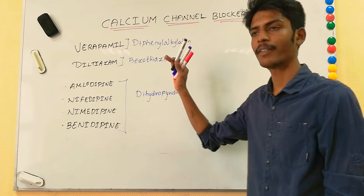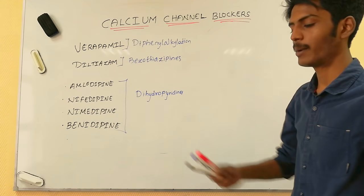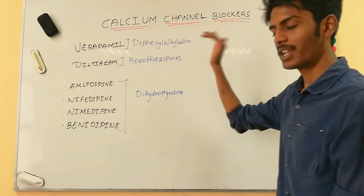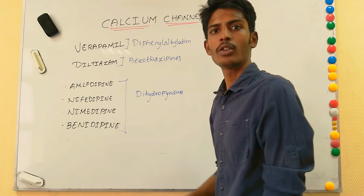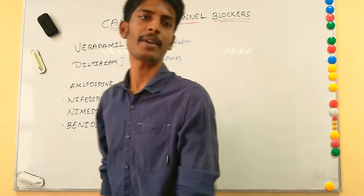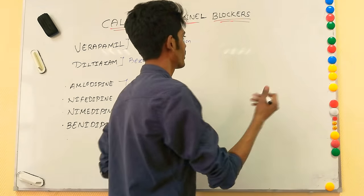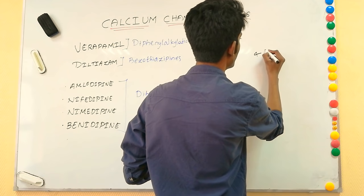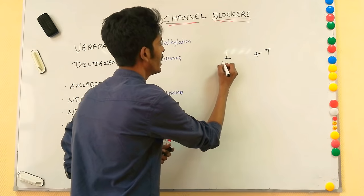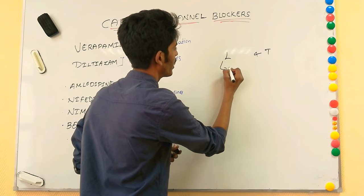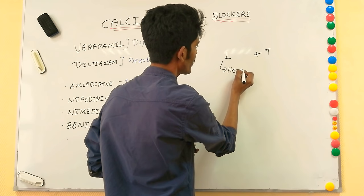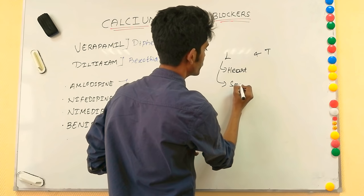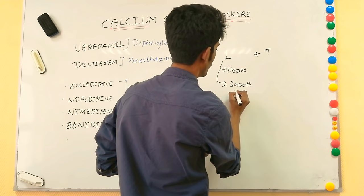These drugs block calcium channels, so how many types of calcium channels are present in our body? There are two types: L-type and T-type. L-type is present on the heart as well as on smooth muscles.